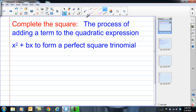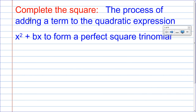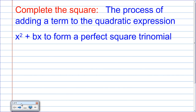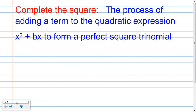So here's what we have. The first thing on your notes is a place for some definitions and some steps. Here is your definition: to complete the square is the process of adding a term to the quadratic expression x squared plus bx to form a perfect square trinomial. I'm going to give you just a second to copy that down and then we'll move on.